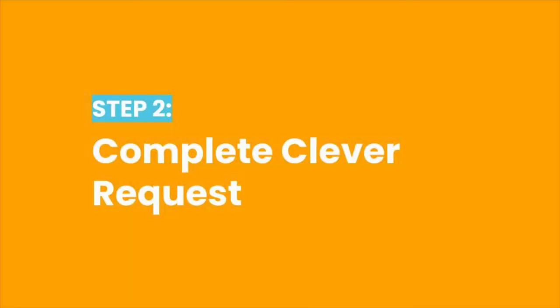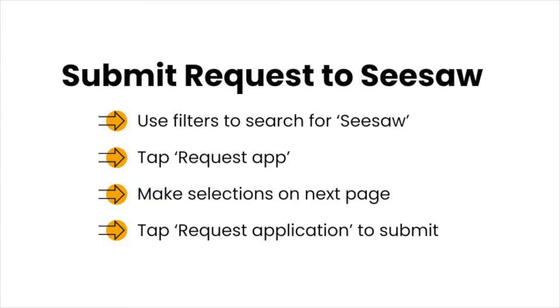Then tap Request Applications. From the Request Applications page, you'll request Seesaw. Using the filters at the top of the page, search for Seesaw. Tap Request App, and make the appropriate selections on the next page, then tap Request Application. Seesaw will receive your request. If you need assistance with requesting Seesaw in Clever, please reach out to Clever Support.